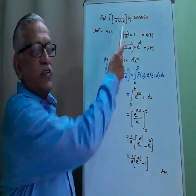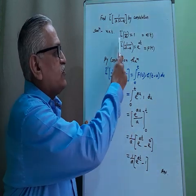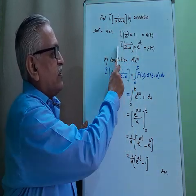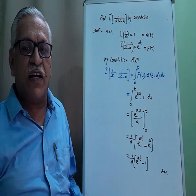To find the inverse of 1 upon s into s minus a by convolution theorem, we know that inverse of 1 by s is 1, and inverse Laplace of 1 upon s minus a is e raised to at as per standard results.